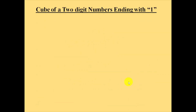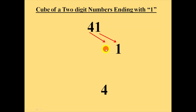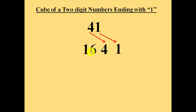Again, move to the next example: cube of number 41. We will note down 4 and 1 to the right side, like this: 1 and 4. Then we will make the square of 4 and note down here: 16. And then we will make the cube of 4 — 4 times 16 is 64 — and note down here.